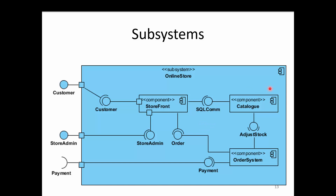When we look at the catalog component, it has only two interfaces, both of which are provided interfaces. One will provide a SQL command interface and the other will provide an adjusted stock interface. Therefore, looking at this overall subsystem, it requires payment data to be inserted into it, and provides two outgoing interfaces named 'customer' and 'store admin'.